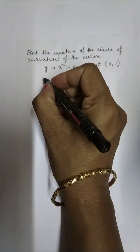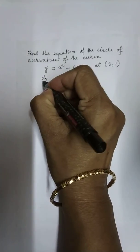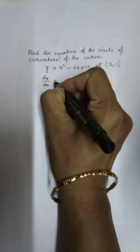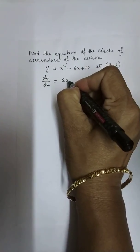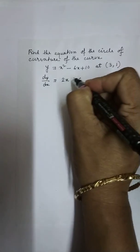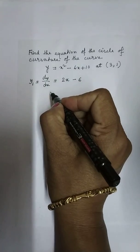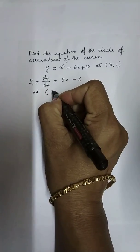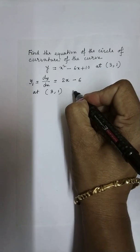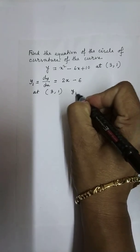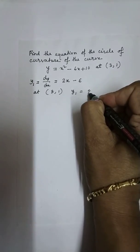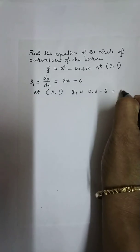So let us find dy/dx. This is y1. So at (3, 1), y1 is, that is 0.